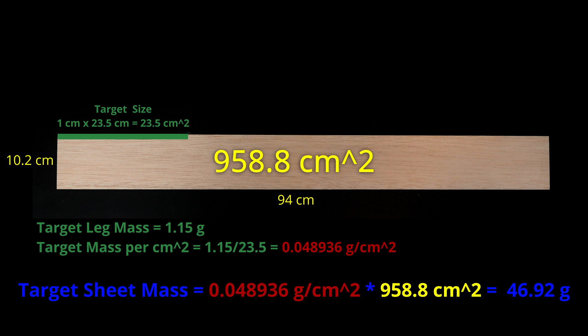Unfortunately, it's not nearly that easy. As it turns out, the density variation in a sheet of balsa can be pretty dramatic. Usually, it's not too bad unless there are some real inconsistencies in the wood, but every single sheet will have some distribution of density.